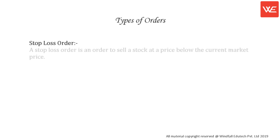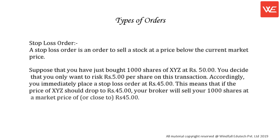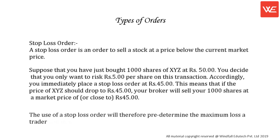A stop loss order is an order to sell a stock at a price below the current market price. Suppose you have just bought 1,000 shares of XYZ at rupees 50. You decide that you only want to risk rupees 5 per share on this transaction. Accordingly, you immediately place a stop loss order at 45 rupees. This means that if the price of XYZ drops to 45 rupees, your broker will sell your 1,000 shares at a market price of, or close to, rupees 45. The use of a stop loss order will therefore pre-determine the maximum loss a trader will incur.